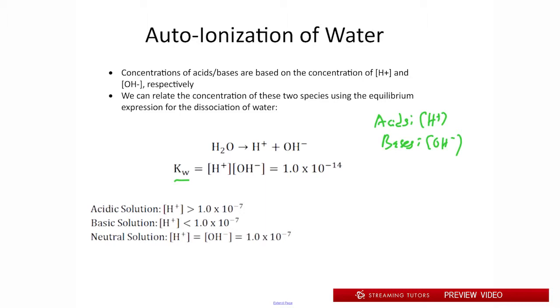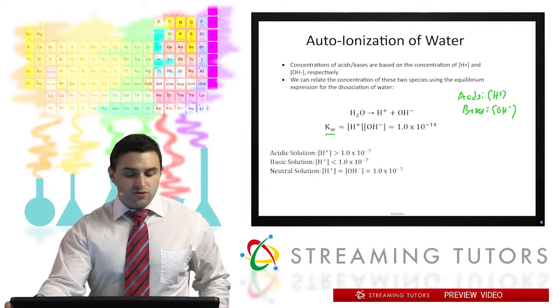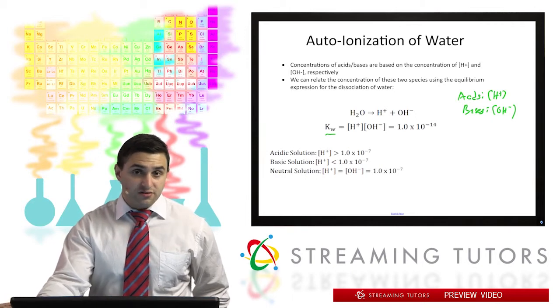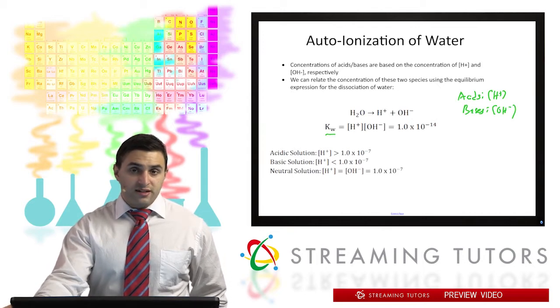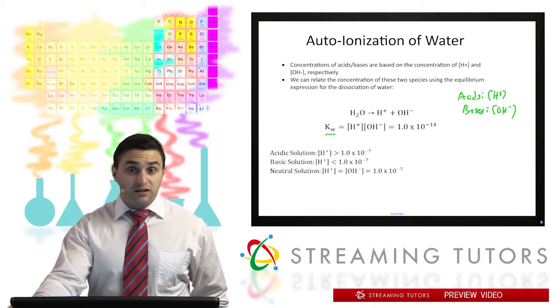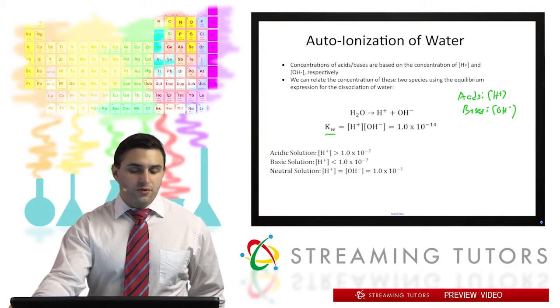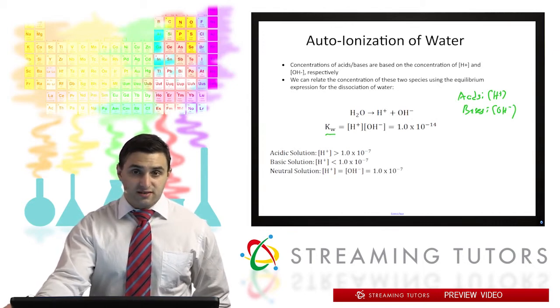So we can define whether a solution is acidic or basic based on the concentration of H+ and OH-. In an acidic solution, H+ concentration is going to be greater than that of hydroxide, or greater than 1 times 10 to the negative 7. On the other hand, in a basic solution, there's going to be more OH- than H+, meaning that H+ is going to be less than 1 times 10 to the negative 7. And finally, for a neutral solution, we're going to have the same concentrations for both, that being equal to 1 times 10 to the negative 7, because if you square that, you get 1 times 10 to the negative 14.